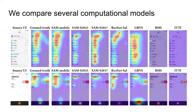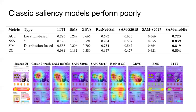We also assessed a number of classic and data-driven computational models. All data-driven models are deep neural nets, which we trained on both natural images and our UIs. Stimulus-driven models, such as CT and DMS, perform worse, with data-driven models generally achieving a higher fit.